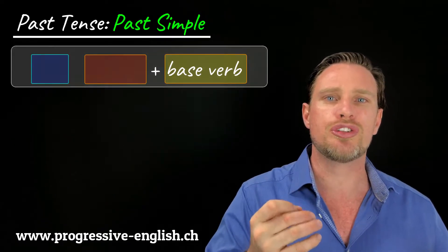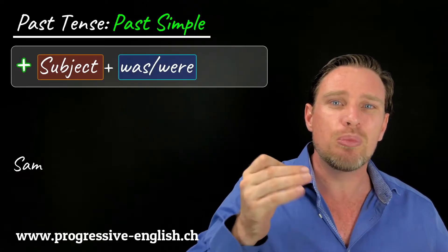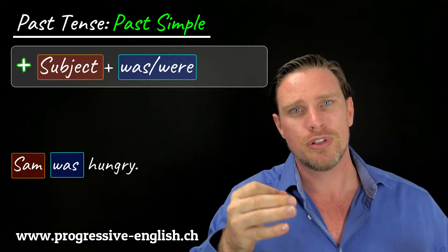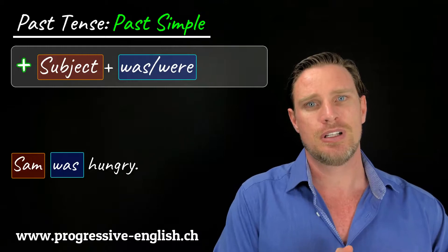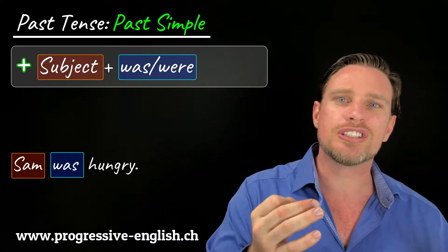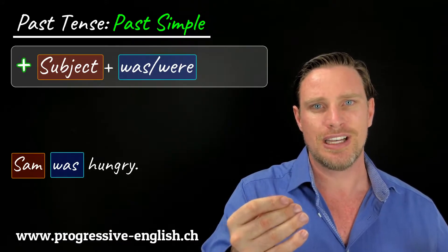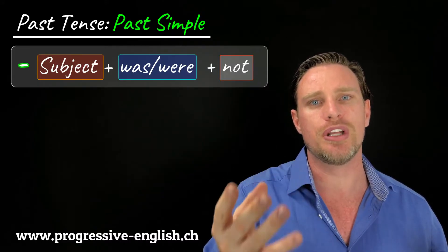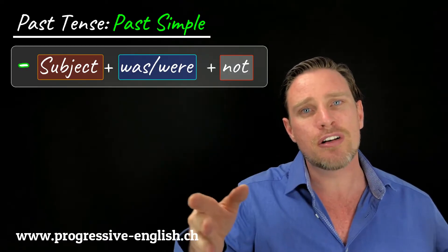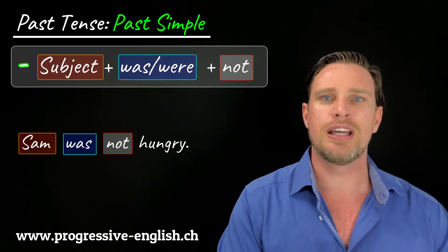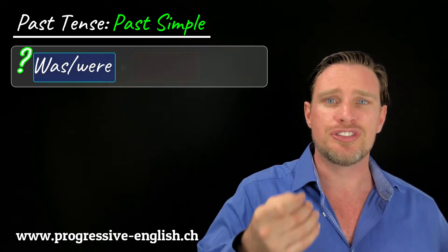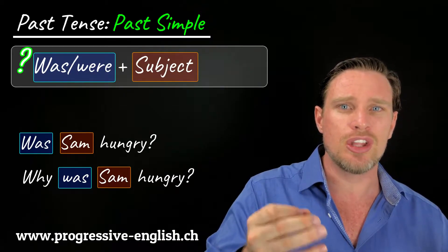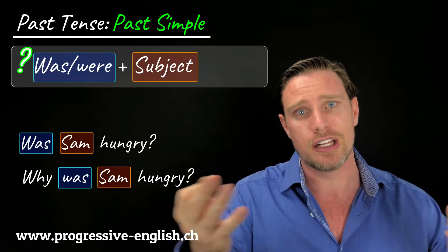One more thing: when we use 'to be' conjugated in the past simple. For example: Sam was hungry — he is not hungry anymore. It fits the formula: subject plus past simple. 'Was' is the past form of 'am' and it's a completed past event. With this structure, when we make it negative we do not need to add the auxiliary 'did'. So 'Sam was hungry' becomes 'Sam was not hungry'. The same with questions — we don't add an auxiliary: Was Sam hungry? Or: Why was Sam hungry? We don't need 'did' when we use 'was' or 'were'.